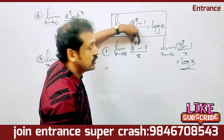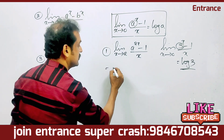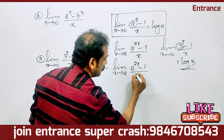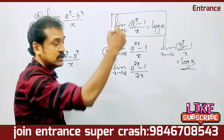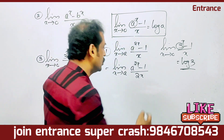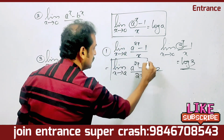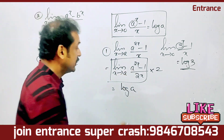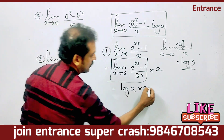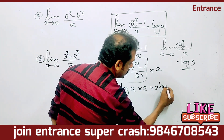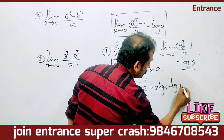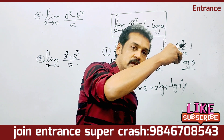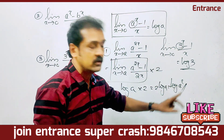Now for a raise to 2x: limit x tends to 0 of (a raise to 2x minus 1) by x. Log of this gives log A into 2, which we write as 2 log A. That is equal to log of A square.